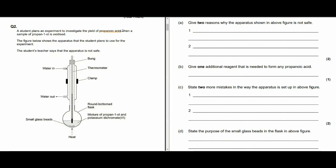Right, this is question two. So a student plans an experiment to investigate the yield of propanoic acid when a sample of propan-1-ol is oxidized. The figure below shows the apparatus the student plans to use for the experiment. The student's teacher says the apparatus is not safe. Give two reasons why the apparatus shown above is not safe. It's not above. It's on the left here. I've squeezed it all onto one page.